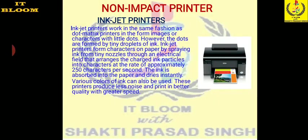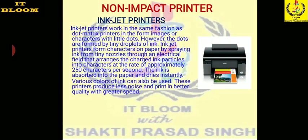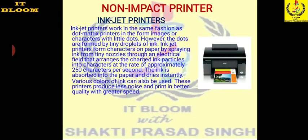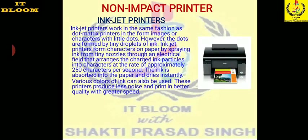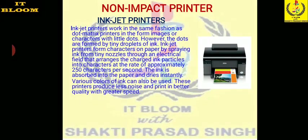In an inkjet printer, ink is sprayed through tiny holes from the nozzle using electronically charged particles which can be arranged to spray the ink on the paper, printing at approximately 250 characters per second. Because the ink is spread this way, the quality of output is better than the dot matrix or impact printer, with better speed and better quality compared to impact printers.